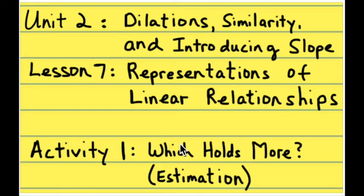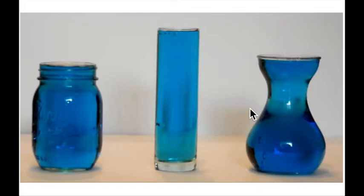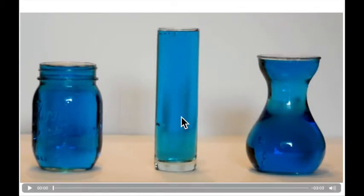This is activity one, which is an estimation activity about representations of linear relationships. The first part of this activity is to show you this video.